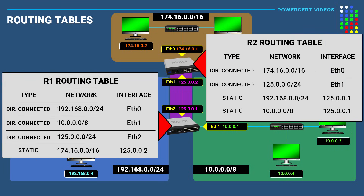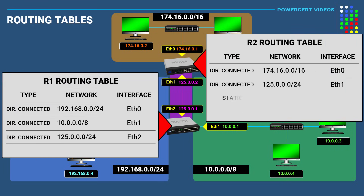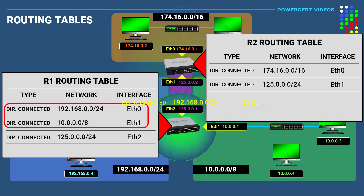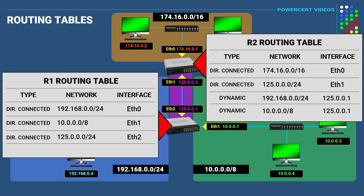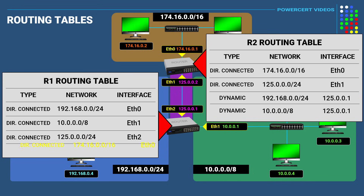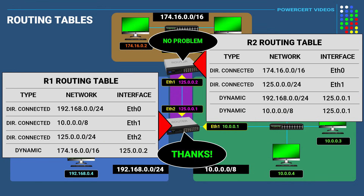As an example, if we got rid of the static routes that we created for these routers and instead configured them with a dynamic routing protocol, the routers will now talk to each other and share their routing tables with each other, which will give them the same results as static routes. So since Router 1 has routing information on the 192 and 10 networks, it will share its routing table with Router 2, and Router 2 will have those dynamic routes entered into its table. Likewise, Router 2 has information on the 174 network and it will share its routing table with Router 1, and then Router 1 will have that dynamic route added to its table.